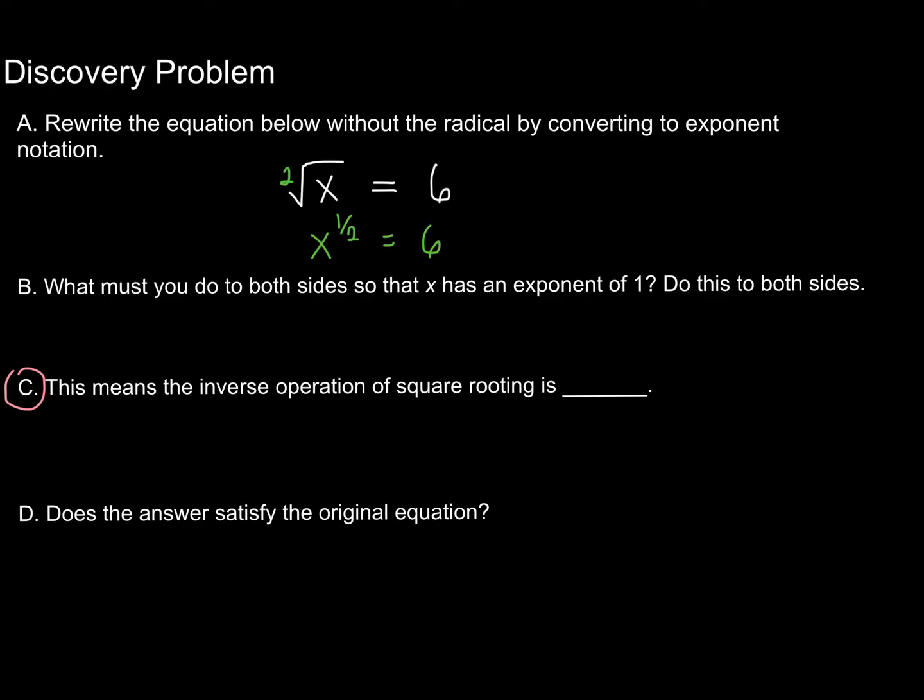So I'll write out what that would look like. Now notice, on the left side, when I am simplifying a base raised to a power raised to another power, I am simply going to multiply the two exponents together. And that's why I chose 2, because 2 times 1 half will give me 1. And so I am then left with x equals 36.